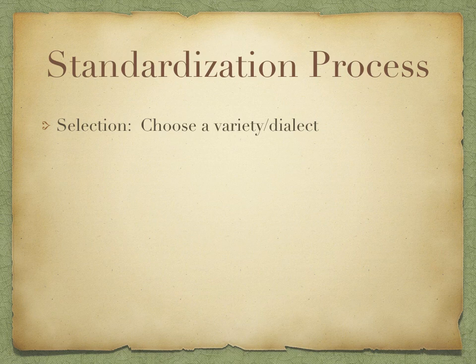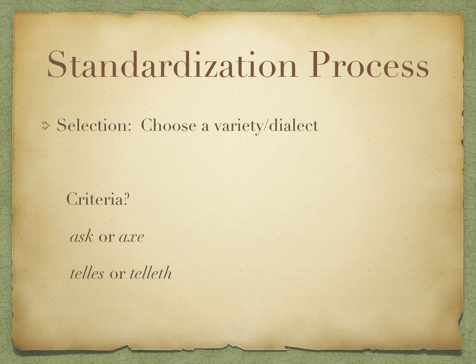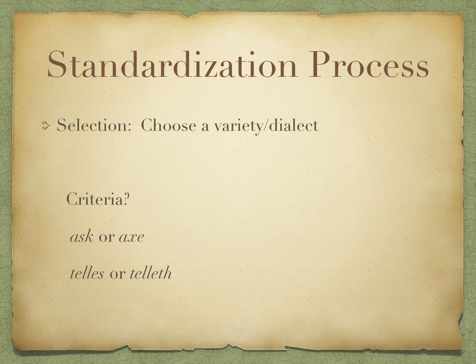Linguists have identified several steps in the process of standardization. The first is known as selection — essentially choosing a variety or dialect to become the standard variety. This raises an important question: how do you make that choice? What are the criteria for determining that something should be standard? For example, how do you decide whether the verb should be 'ask' or 'ax'? How do you decide whether the third person singular of a verb should be 'tells' or 'telleth'? These are real examples of variation at the time. If you're going to have a standard, you have to decide that one is correct and the others are non-standard. We might think the reasonable thing would be to choose the most widespread forms by some kind of majority-rules approach.